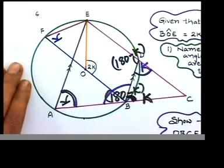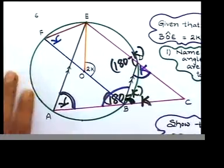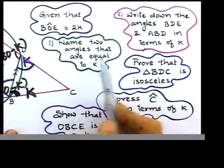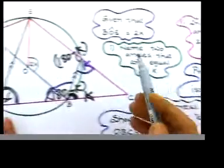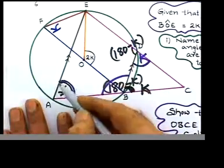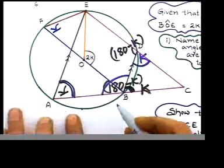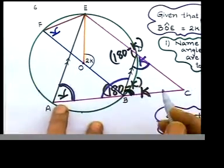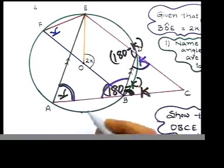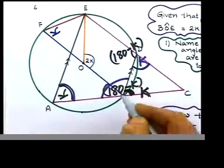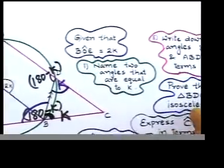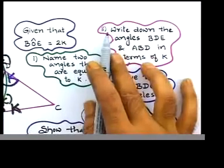Let's actually look at the questions that they asked us. Name two angles that are equal to k. Well, we named two angles: that is a k, that is a k. You can say angle A, angle F. If you don't like, use the three letter notation: angle BAE, or angle BFE for that angle. Let's look at the next one, that's the second part.